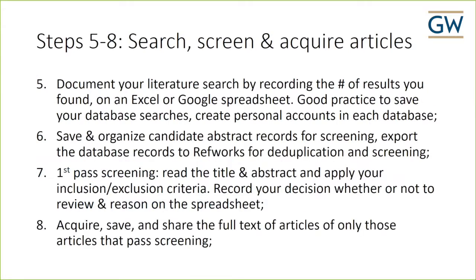The next steps are to document your literature search by recording the number of results you find on a spreadsheet, and it's good practice to save your searches as you go along. Create accounts in these databases — for example, with PubMed, create a My NCBI account and save your work there. There's nothing more frustrating than spending a couple of hours doing a detailed search and then having to redo it. Save and organize the candidate abstract records using bibliographic tools like RefWorks, Mendeley, or EndNote — many of these have tools to help you deduplicate results and organize abstracts for screening.